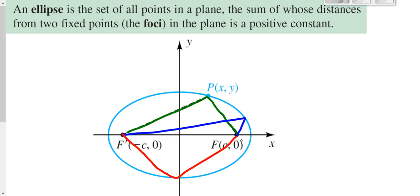So no matter when I start at one focus and go to the other focus, all those two segments of the same color always add up to be the same distance or the same number.